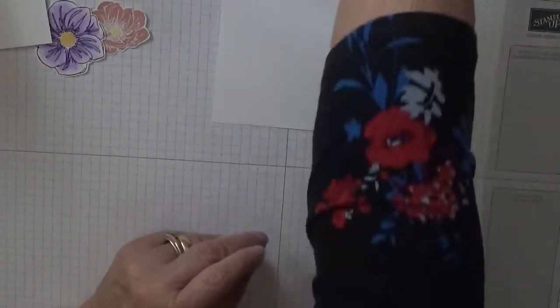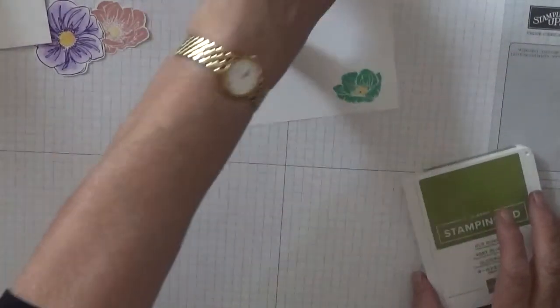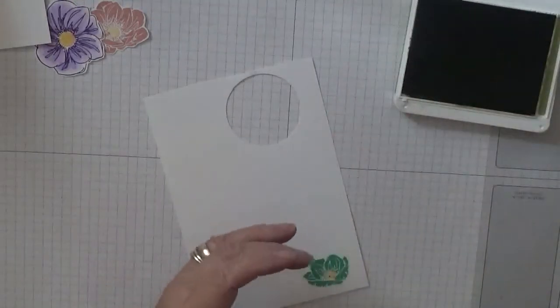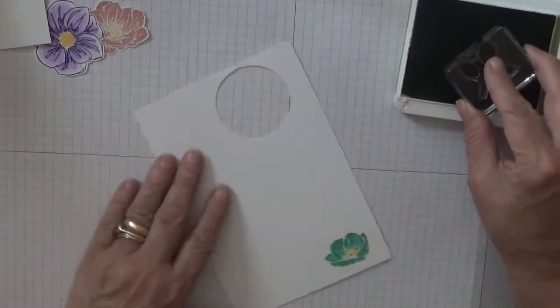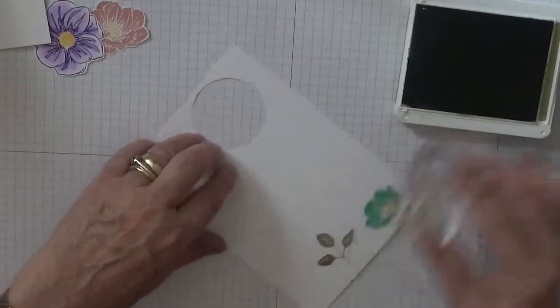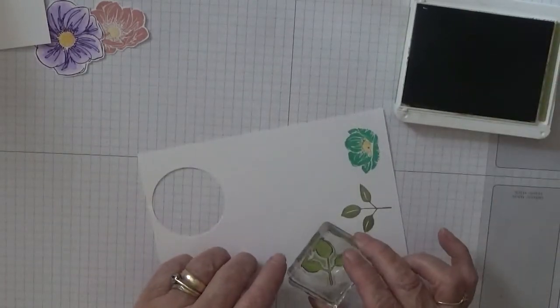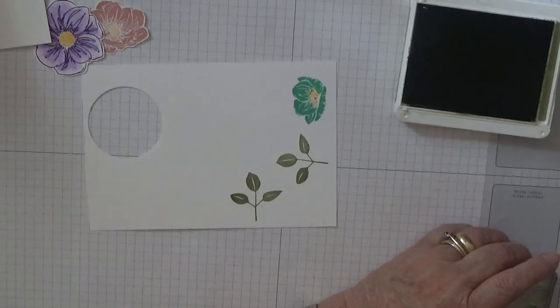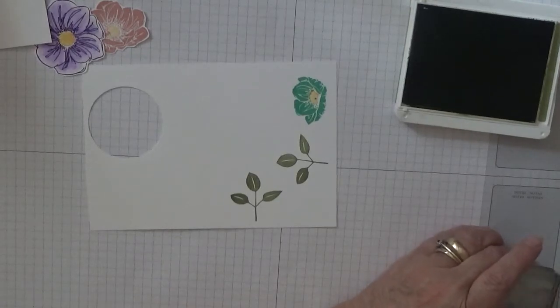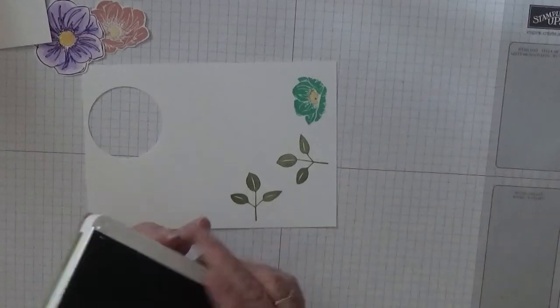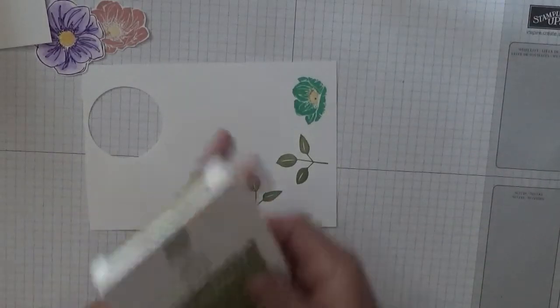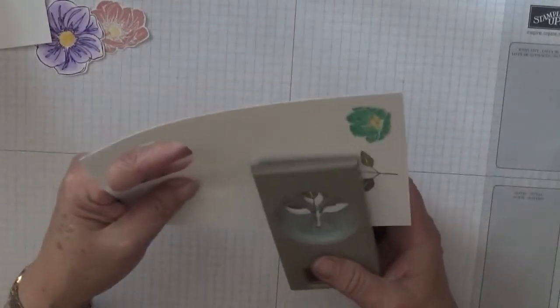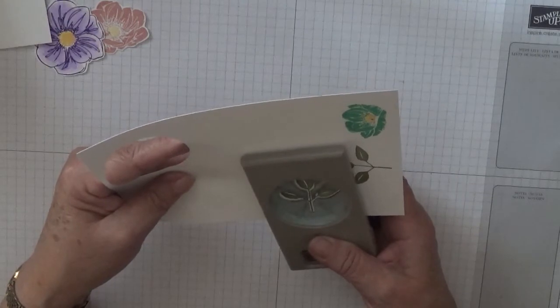Then we have the leaves to do, so I'm going to do them in Old Olive and we only need two. Stamp out two leaves and we'll punch them out. Punch out these leaves first using this leaf punch.